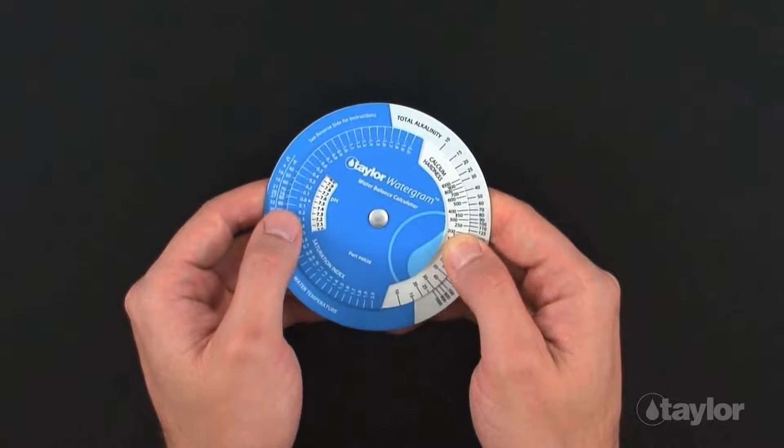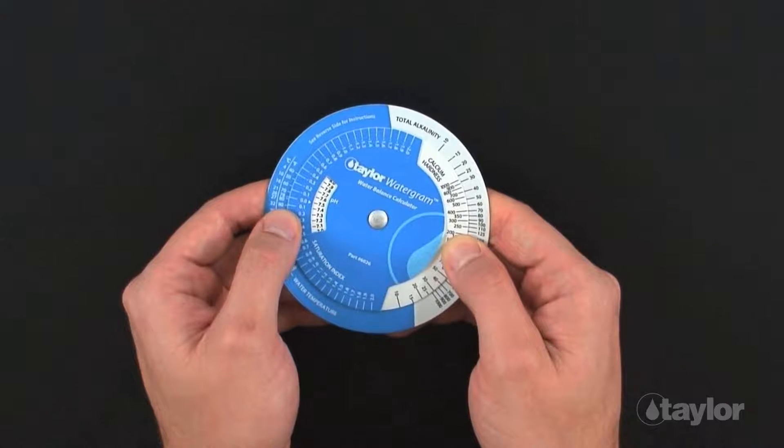Find the water temperature which is located on the outer wheel. If the temperature is not known, use 78 degrees Fahrenheit for pools or 104 degrees Fahrenheit for spas and hot tubs. In this example, we will assume the temperature is unknown and use 78 degrees Fahrenheit as our temperature value.